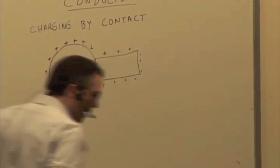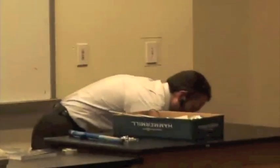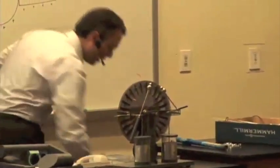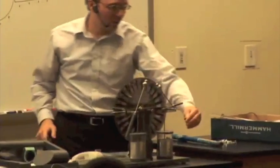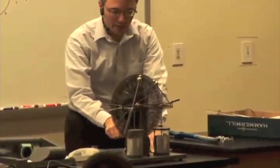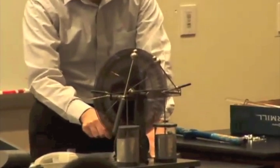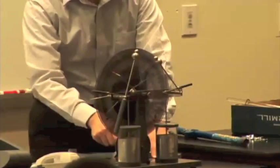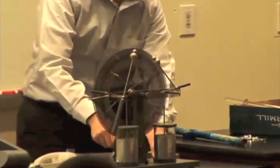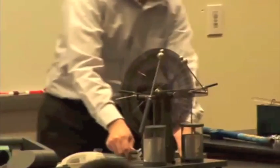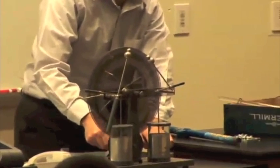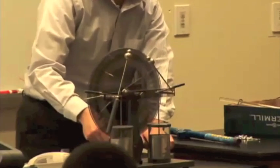So let's see if we can try that out. So we have this, which is a Wimshurst machine. And what it does is if I turn the crank, it's going to drive two counter-rotating disks with little conductive plates on them. And there are sort of contact brushes here set up in such a way that it separates the charge. And these two little jars down here are called Leiden jars, and they're basically just capacitors, ways of storing charge.